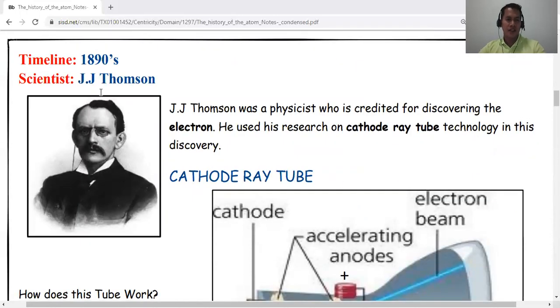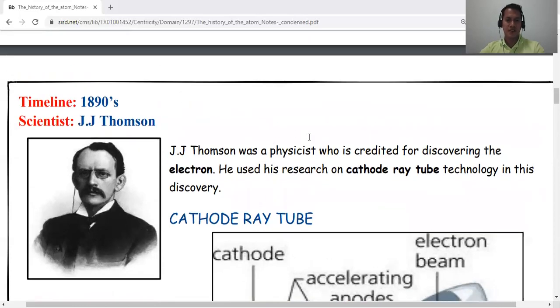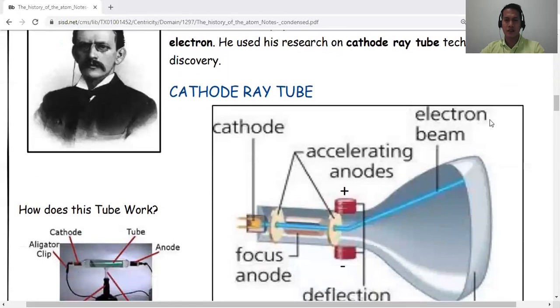By the 1890s, there was a scientist by the name J.J. Thomson. J.J. Thomson was a physicist who is credited for discovering the electron. He used his research in cathode ray tube technology in this discovery. The timeline is 1890s. Let's take a look at his experiment.